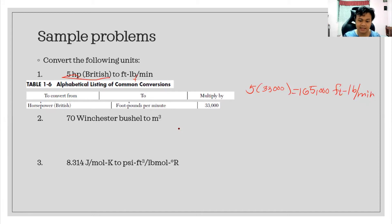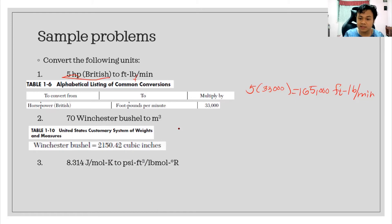Next, the 70 Winchester bushel. You can find it in table 1-10, the United States customized system of weights and measures. But I also found a value that is similar to this in table 1-6, which is the bushels US dry to cubic meters. You just have to multiply it by 0.3524. So you will get 2.47 cubic meters. It's that easy to use your Perry's.